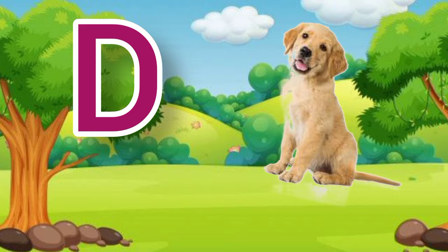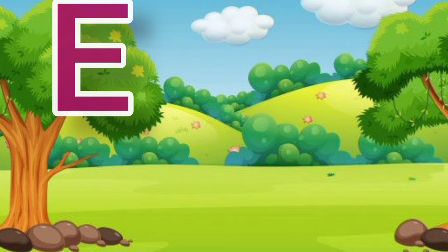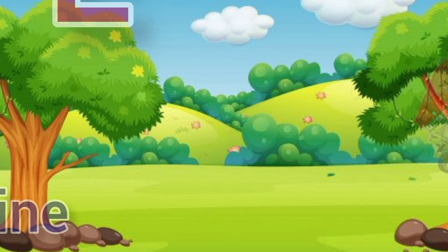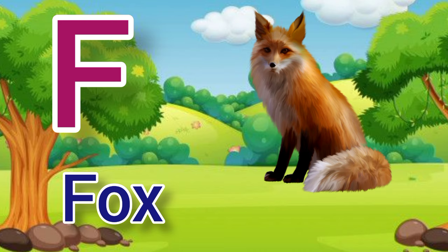D for dog, dog means kutta. E. E for engine, engine means engine. F. F for fox, fox means loomadi.